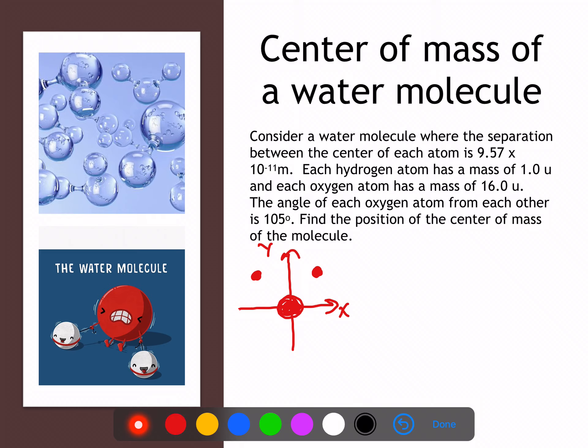Then the hydrogen atoms I will put here and here. Based upon the information given in the problem, all of these things are equidistant. This is a distance r and this is a distance r. Now, the angle in between these two vectors here is 105 degrees. So with respect to the y-axis, the smaller angle here is going to be 52 and a half degrees.